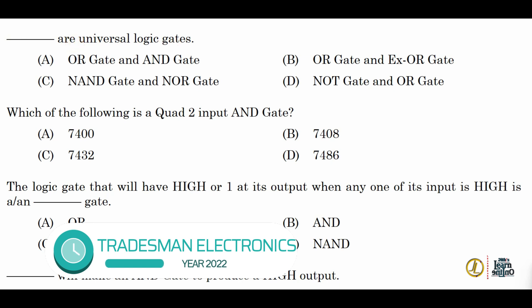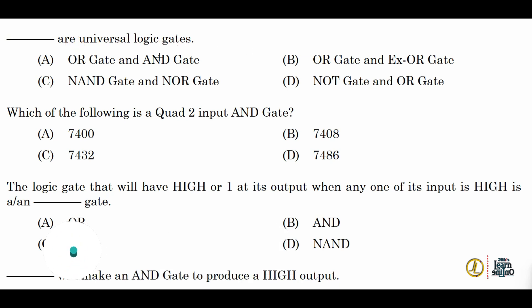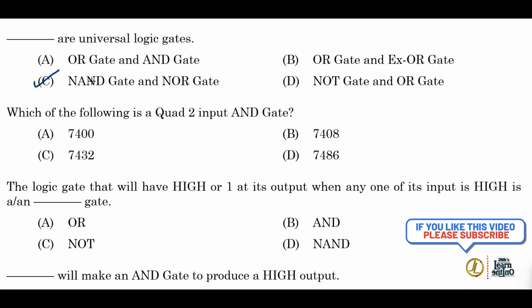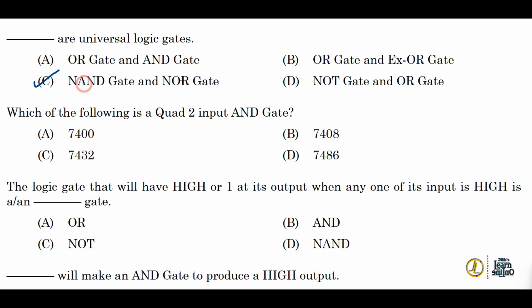Next: what are universal gates? The universal gates are NAND and NOR gates, because using these gates we can construct every other gate. So NAND and NOR gates are known as universal gates.